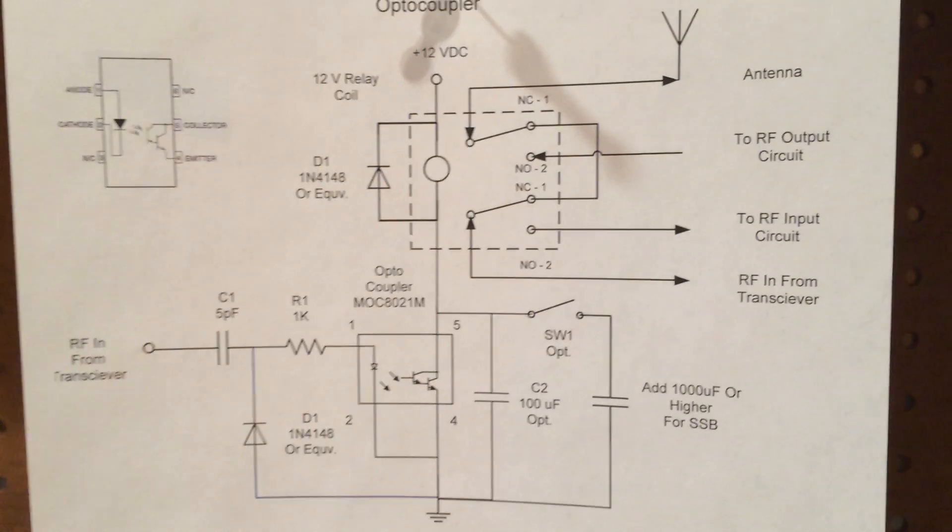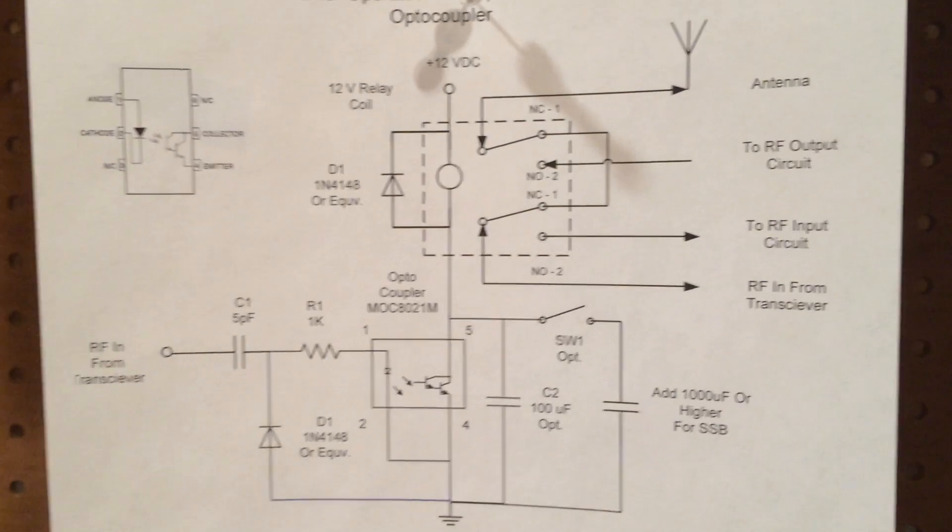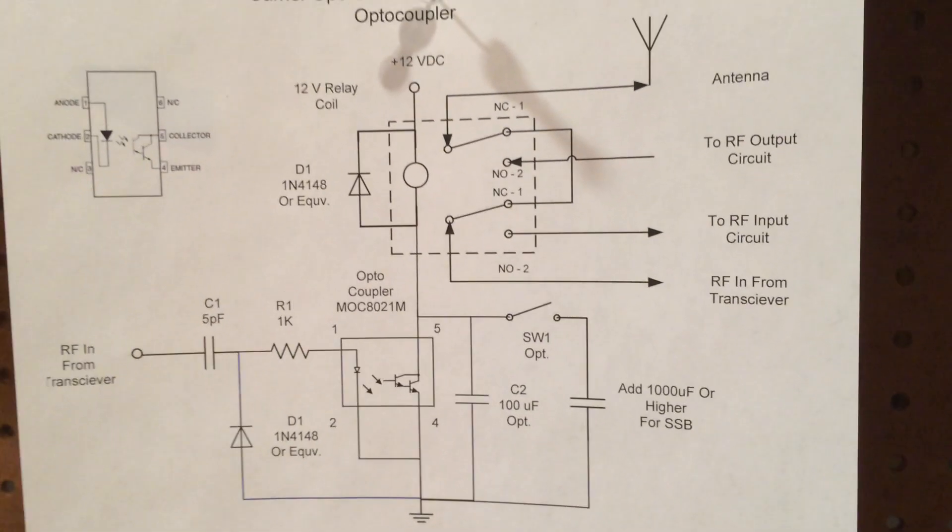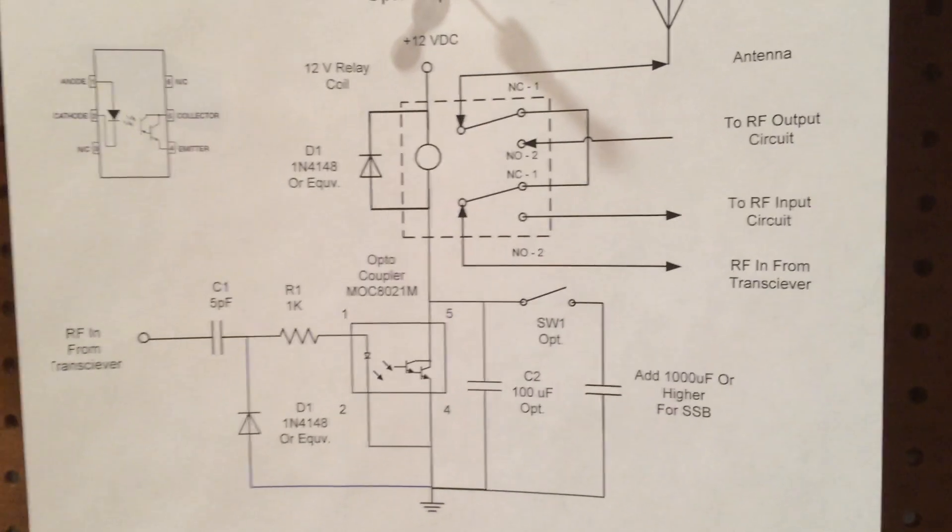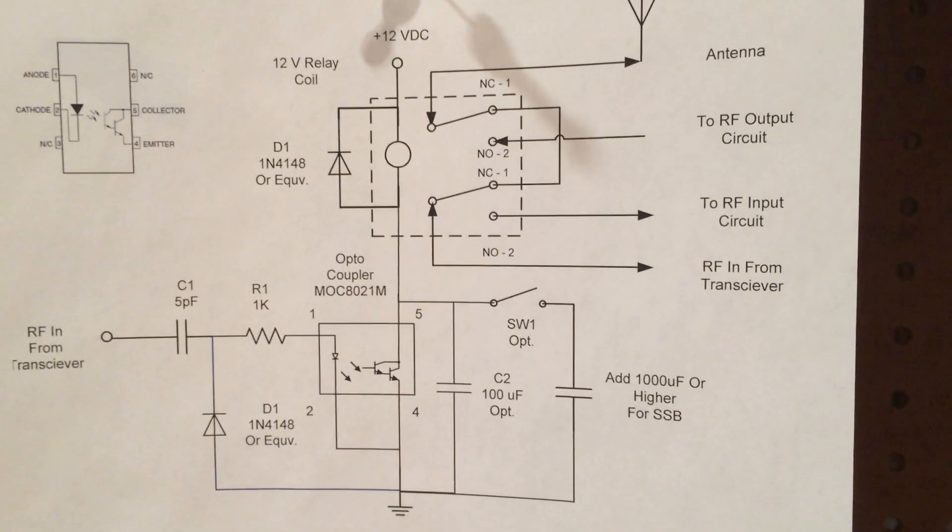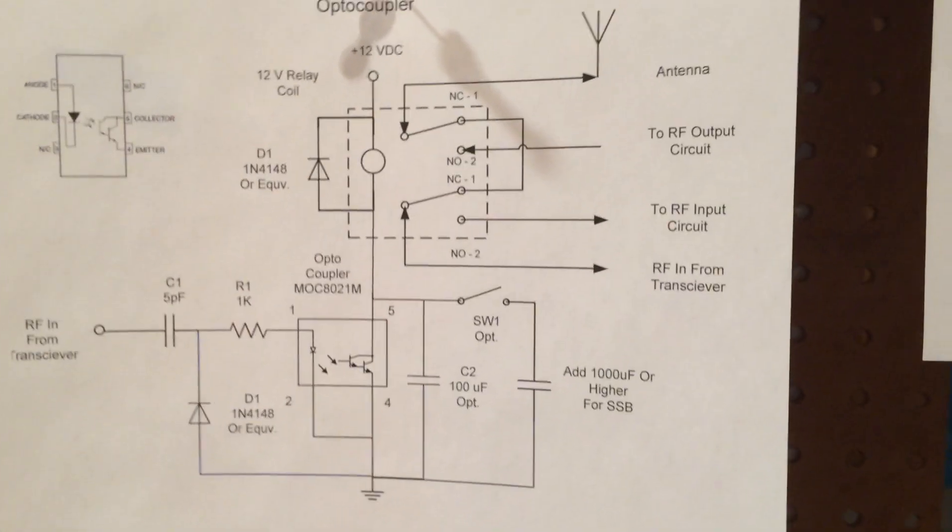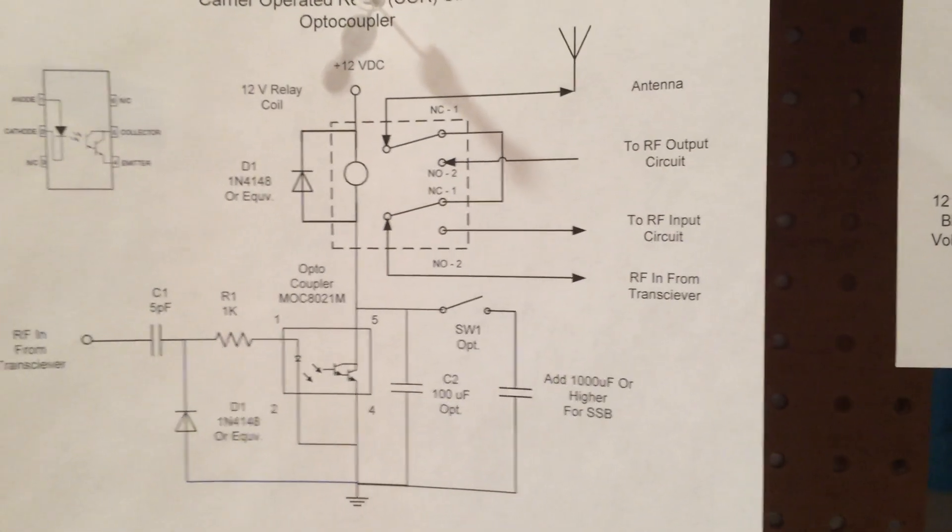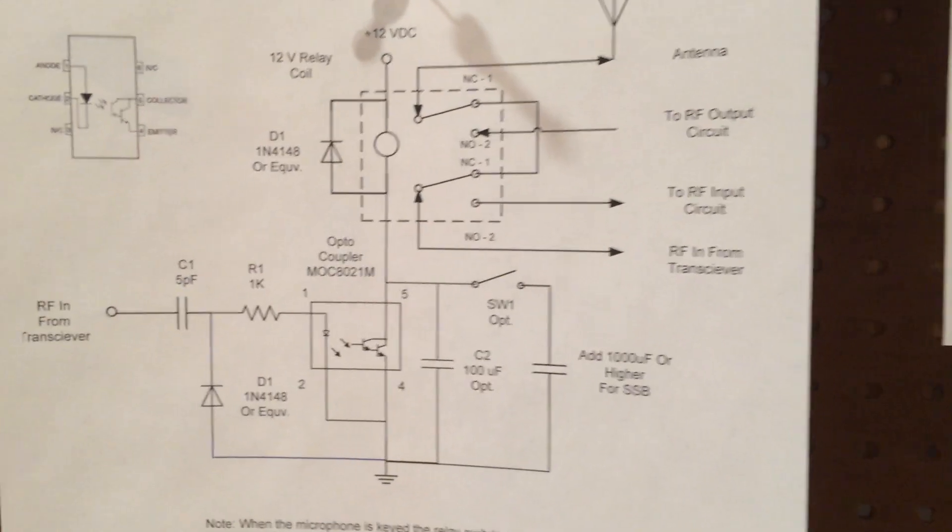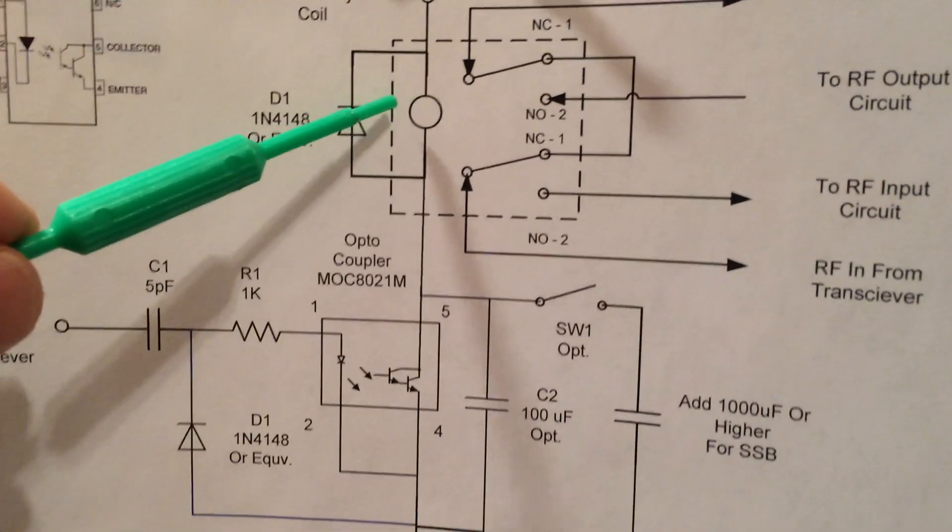So what is the advantage to a circuit like this? Well, first of all, you're not drawing as much RF energy as you would with the conventional circuit because it takes very little current to drive the LED diode. And then it has complete isolation of the 12 volts. The transistor inside there is a photo transistor, and you can see it's a Darlington pair, so it has enough gain to drive the relay coil.